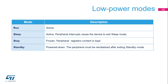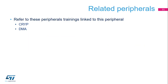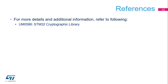Here is an overview of the status of the hash processor in each of the low power modes. Hash operations are not possible when the device is in stop mode. This is a list of peripherals related to the hash processor. Please refer to crypt-peripheral trainings if you want to know more about cryptographic engines, and refer to training on the DMA peripheral for information on how to configure the hash channel. For more details, please refer to the user manual available on our website.